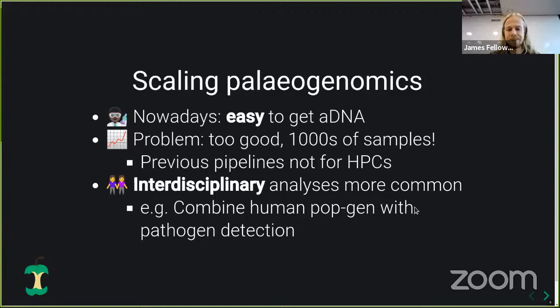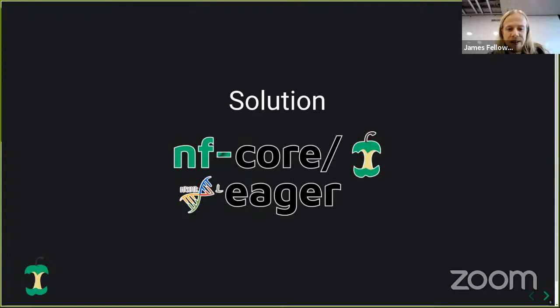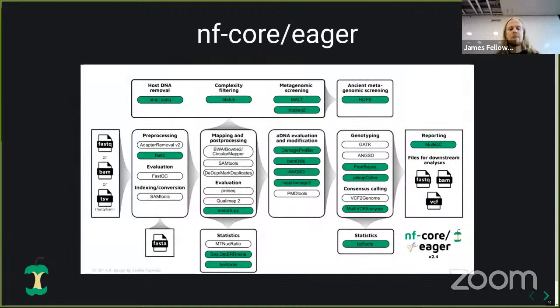The solution that Alex started and I continued was converting the original EAGER pipeline and extending it into Nextflow as NFCore EAGER. We still have the basic genomics pipeline steps of pre-processing — adapter removal, FASTQC for quality control — then mapping with a variety of mappers and evaluating mapping quality. Then we have an ancient DNA-specific section, which allows modification depending on the damage or fragmentation: either filtering for reads with damage or removing damage in silico.